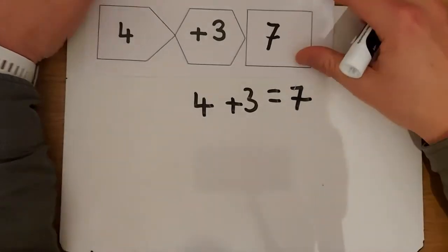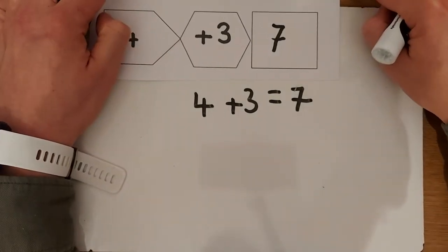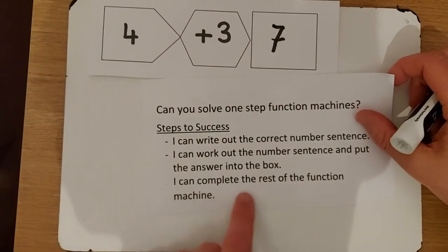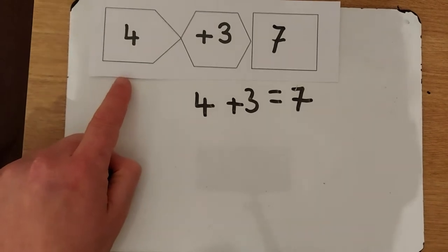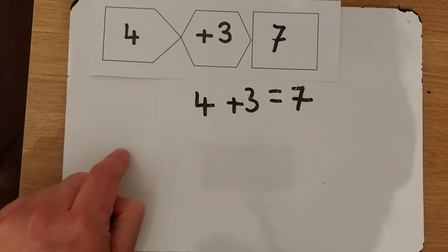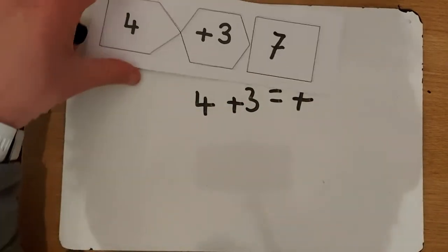That is how simple it is. With the success criteria, the last one is 'I can complete the rest of the function machine.' You'd have another two numbers over here, so you might have a 7, you might have a 2, and to both of those numbers you'd have to add 3 each time. That would be your function machine.